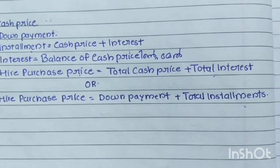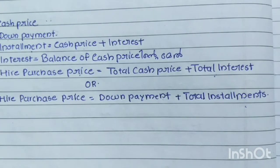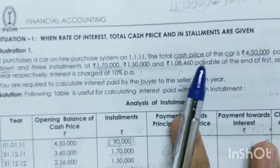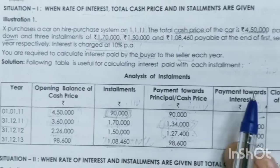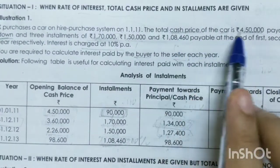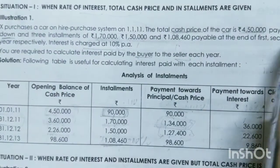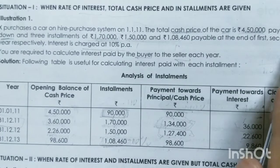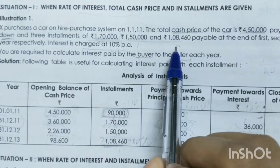This is the first illustration, page number 424. The hire purchase system on 1 January 2011. The total cash price of the car is $4,50,000. Payable $19,000 down — this is the down payment. And three installments of $1,70,000, $1,50,000 and $1,84,460.